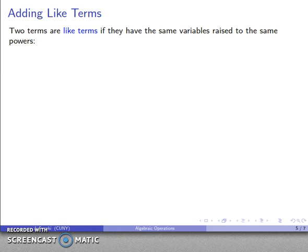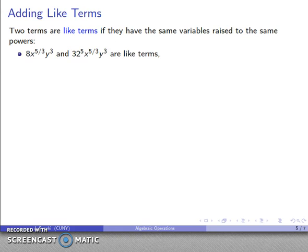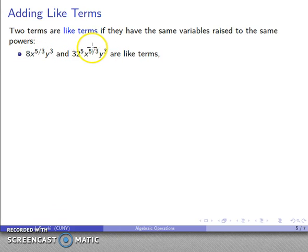Along with the distributive property, we also use the notion of combining like terms. Two terms are said to be like terms if they have the same variables raised to the same powers — that's an absolute requirement. For example, 8x^(5/3)·y³ and 32x^(5/3)·y³ are like terms: both have x raised to 5/3 and y raised to the third power.